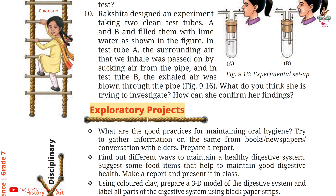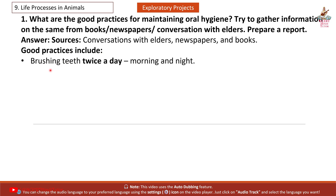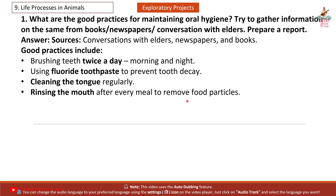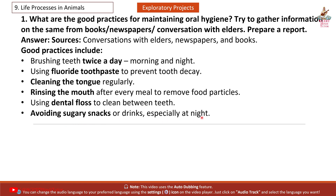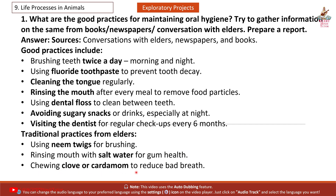Exploratory Project 1: What are the good practices for maintaining oral hygiene? Sources: conversations with elders, newspapers, and books. Good practices include: brushing teeth twice a day (morning and night), using fluoride toothpaste to prevent tooth decay, cleaning the tongue regularly, rinsing the mouth after every meal, using dental floss to clean between teeth, avoiding sugary snacks especially at night, visiting the dentist every 6 months. Traditional practices from elders: using neem twigs for brushing, rinsing with salt water for gum health, chewing clove or cardamom to reduce bad breath.